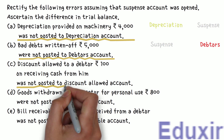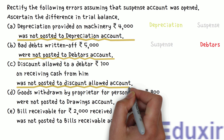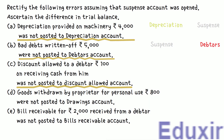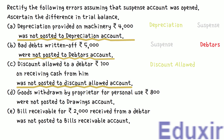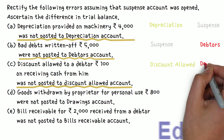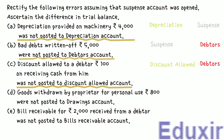Let us now take up the next error. In this case, there was 100 rupees of discount allowed to a debtor on receiving cash from him, but it was not posted to the Discount Allowed Account. The discount allowed is an expense for the business, so we debit the Discount Allowed Account with 100 rupees. As the debtor pays 100 rupees less, the debtors asset decreases, so we credit the Debtors Account with 100 rupees. However, this was not posted to Discount Allowed Account — it was properly posted to the Debtors Account. To rectify this error, we debit the Discount Allowed Account with 100 rupees. As this is a one-sided error, the Suspense Account should be credited.